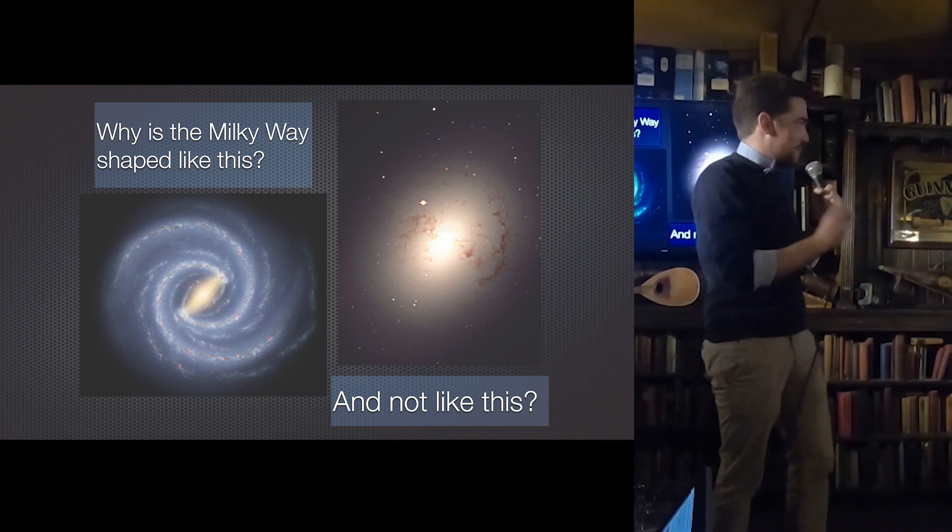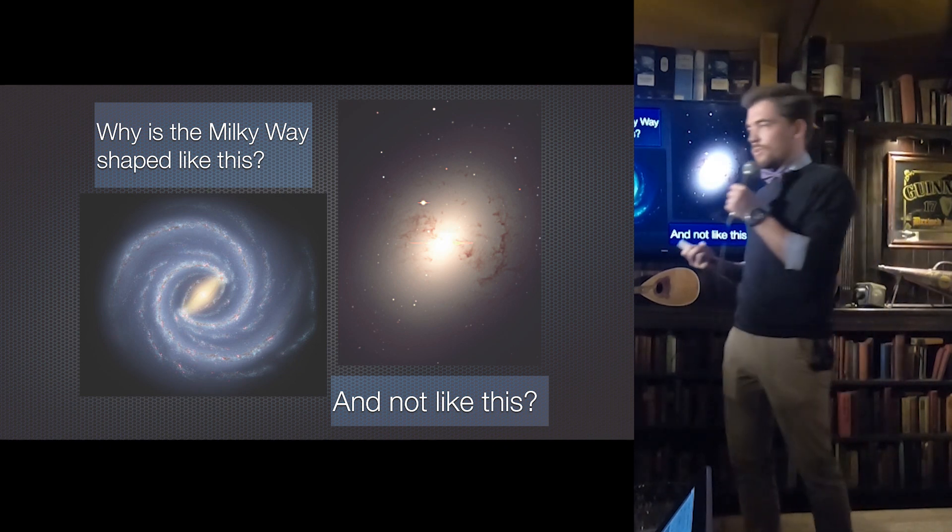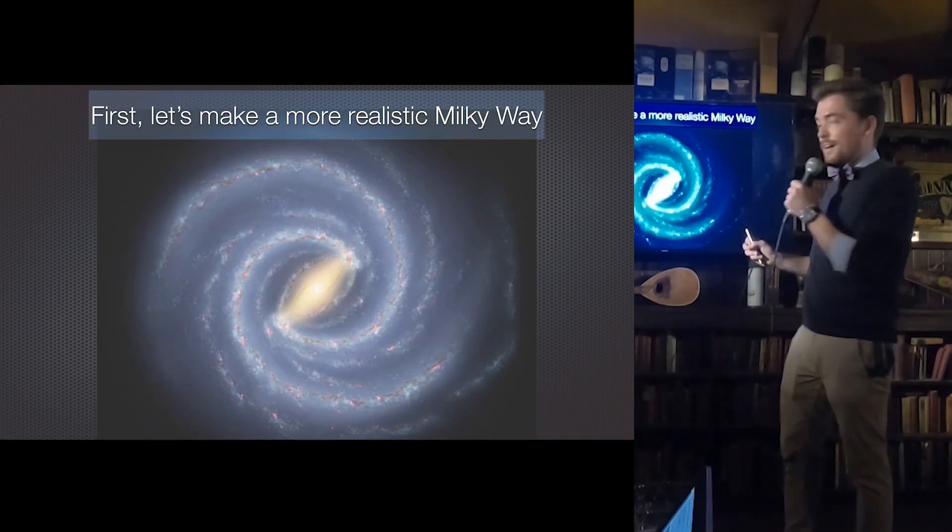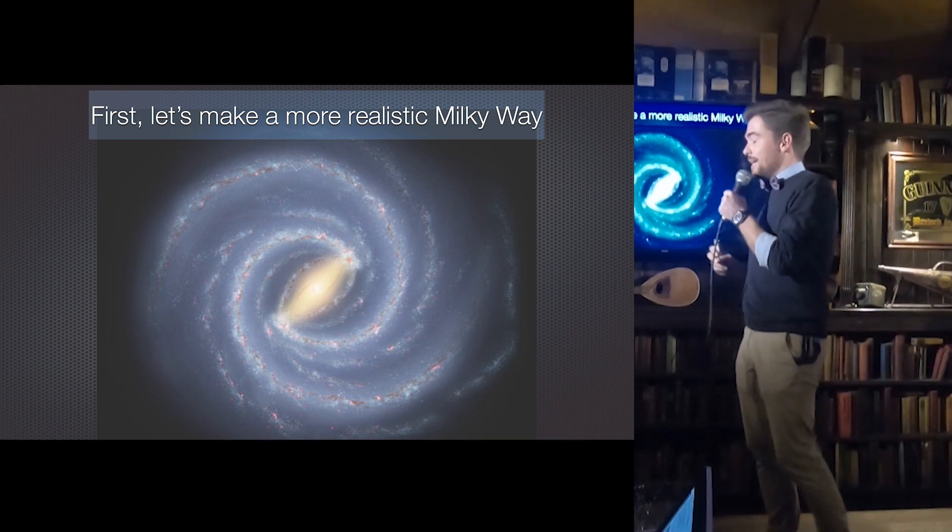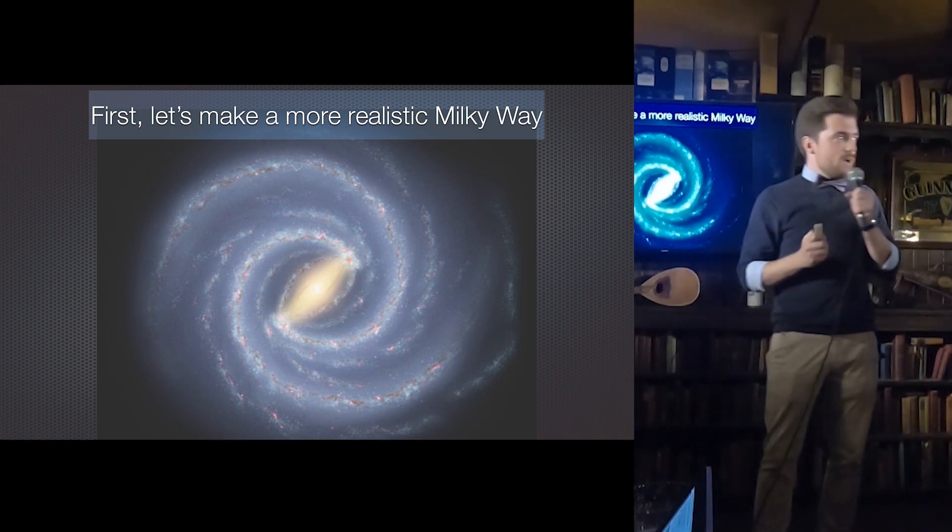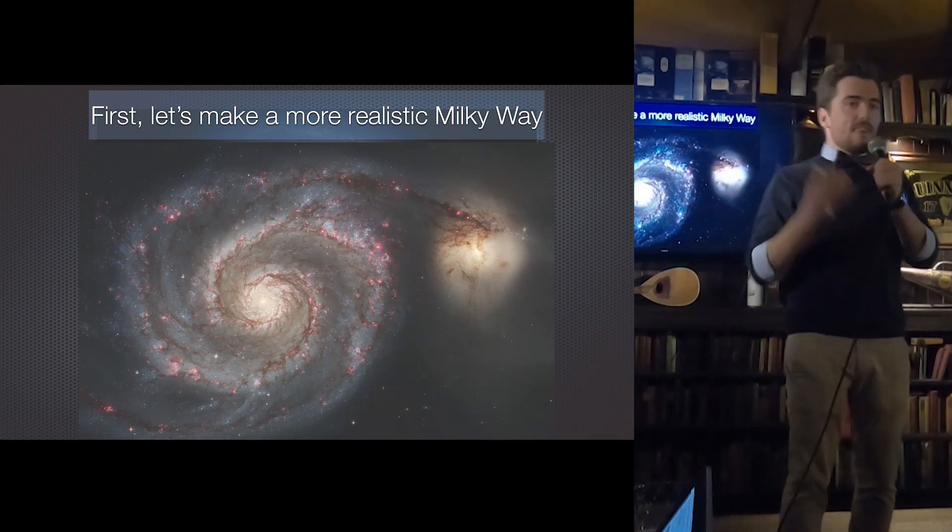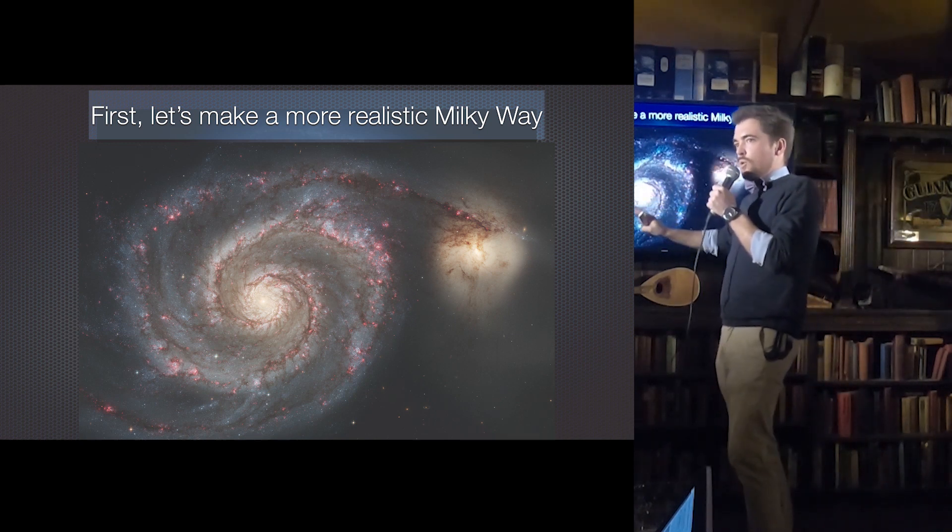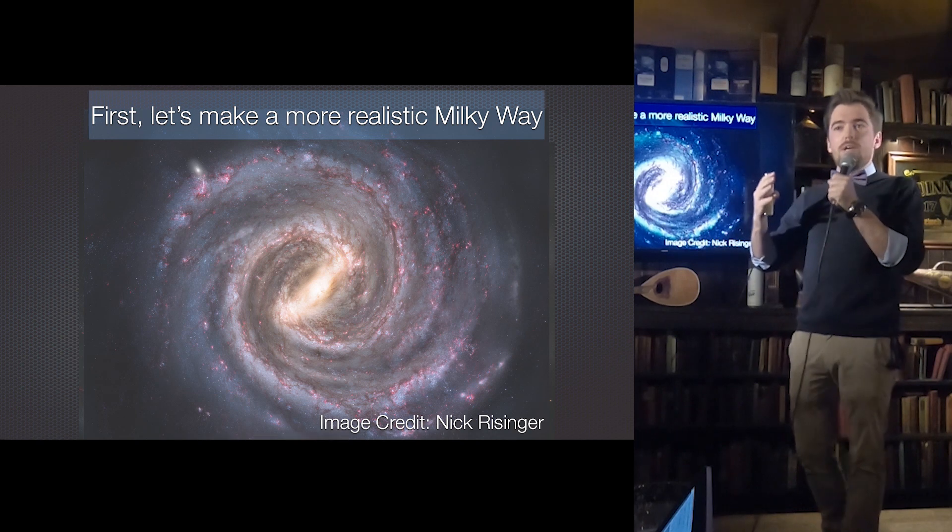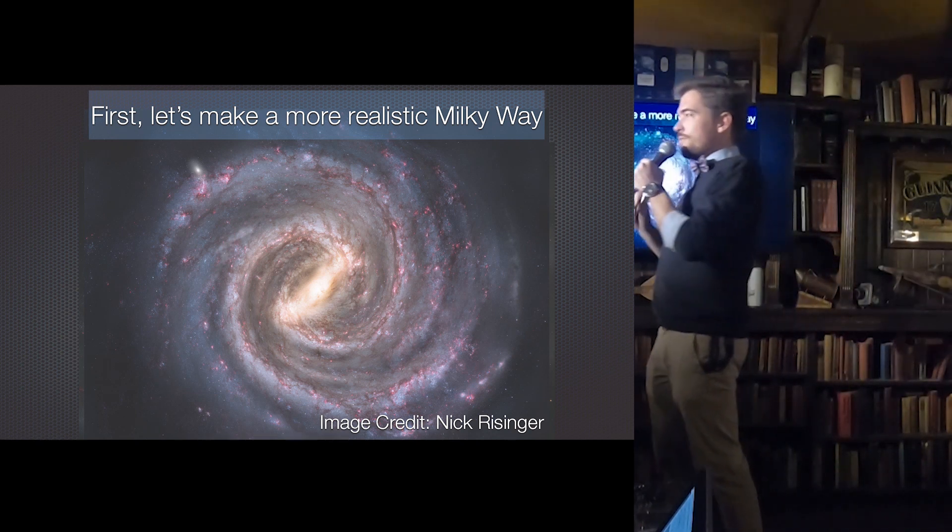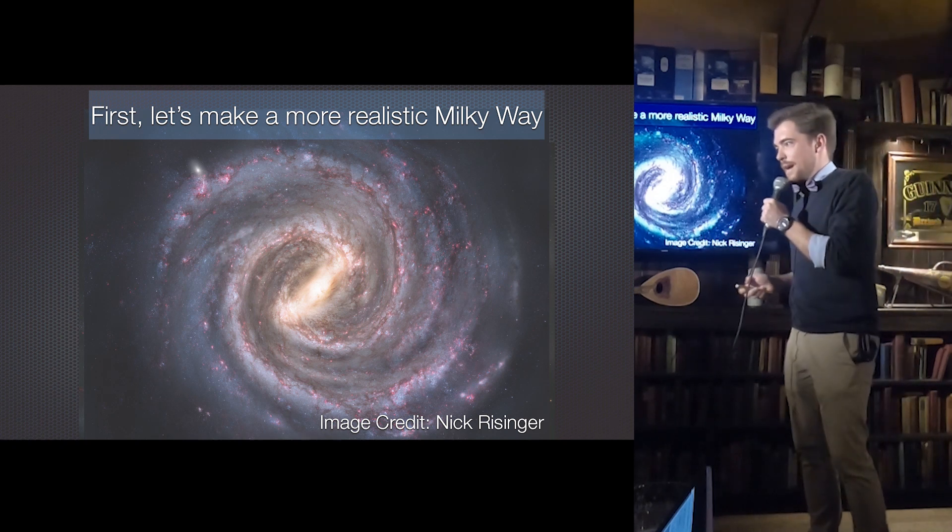Naturally, we cannot take a picture of the Milky Way from above because we are embedded within the Milky Way. So this is actually a simulation of what the Milky Way looks like based on the data that we've taken from the ground. But we can do a little bit better than this simple simulation. So we can look at other spiral galaxies in the neighborhood and say, I think that the Milky Way should look something like this. This is sort of what we think the Milky Way probably looks like if we were able to fly millions of light years up and then take a picture of it from above.